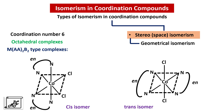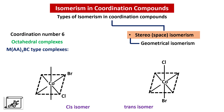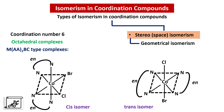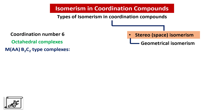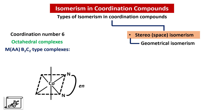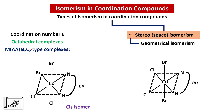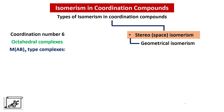In the cis isomer the two chlorine atoms are on the same side, and in the trans isomer the two chlorine atoms are on the opposite side. The next type is MAA2BC type complexes, where we focus on the position of B and C ligands. In the cis isomer the bromine and chlorine atoms are on the same side, whereas in the trans isomer the bromine and chlorine atoms are on the opposite side. Next is MAAB2C2 type: cobalt is the central atom with EN (ethylenediamine) on one side, and in the cis isomer the B2 and C2 ligands are on the same side; in the trans isomer, two bromine are on the opposite side and two chlorine are on the same side.